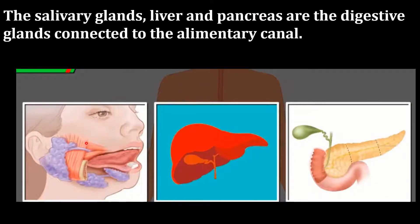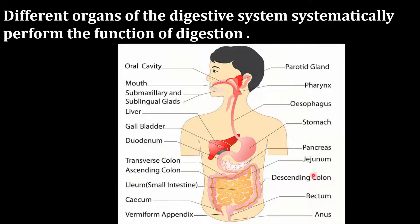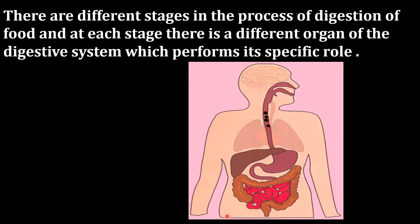The salivary glands, liver, and pancreas are the digestive glands connected to the alimentary canal. Different organs of the digestive system systematically perform the function of digestion. There are different stages in the process of digestion, and at each stage a different organ performs its specific function.